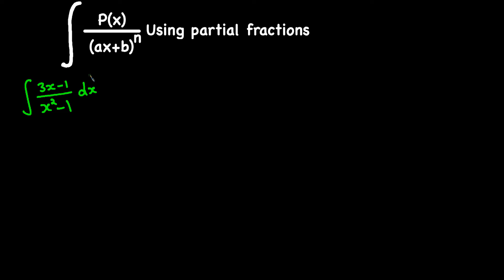In this video we will learn how to integrate a rational function using partial fractions. We're going to integrate 3x minus 1 over x squared minus 1. Partial fractions is basically the opposite of adding two fractions — instead of combining them into one, here we're going to break it down into two different fractions.